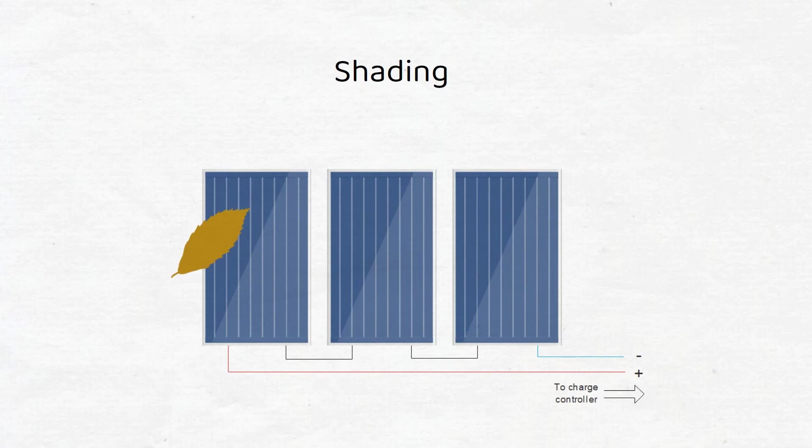If you expect shading to happen, I recommend using smaller panels, a parallel setup, or a hybrid setup. In the diagram we can see that the leaf will have a big impact on the total output power of the series connection.